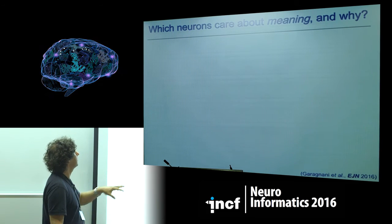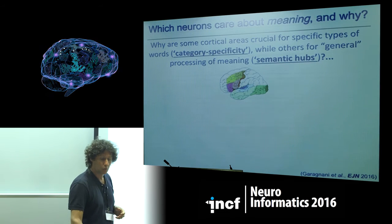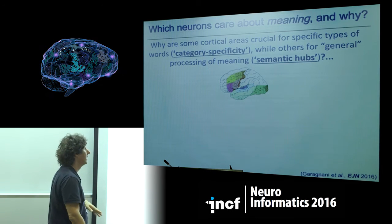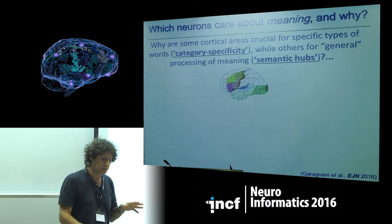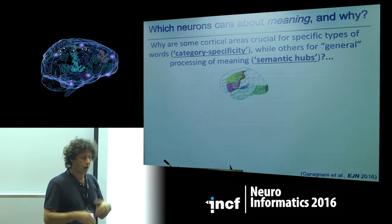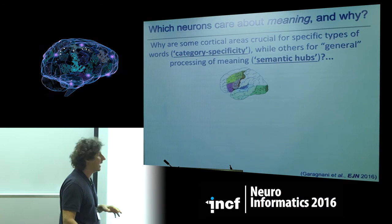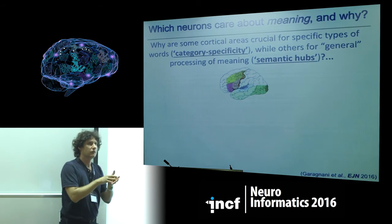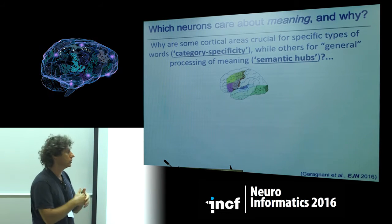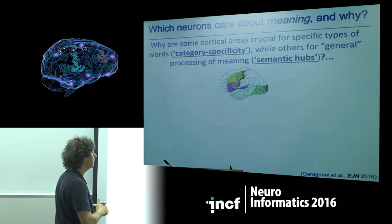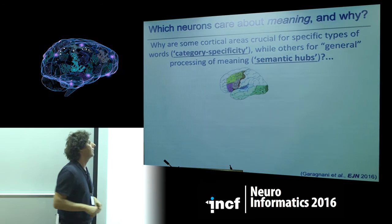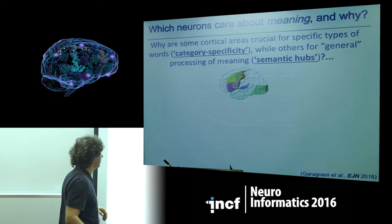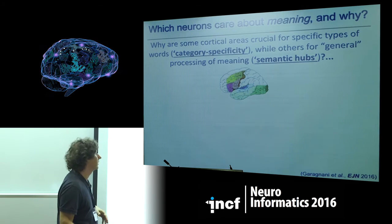Returning to the theme of meaning and how we learn word meaning: the model helps explain why certain brain areas care about different semantic categories. The motor cortex responds specifically to action words and not visual words. Conversely, areas around the visual cortex show activity when we hear a word with a strong visual component, such as 'sun,' whereas 'run' would activate the motor cortex instead.